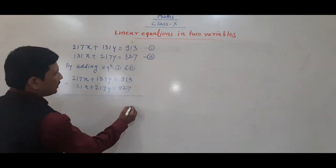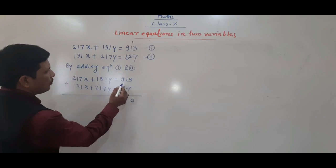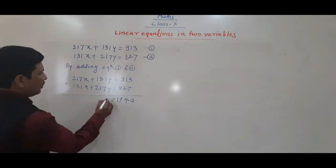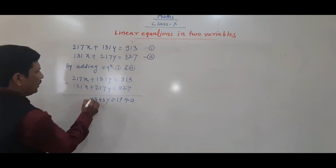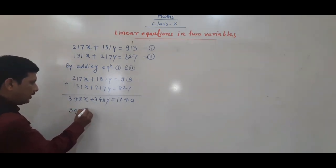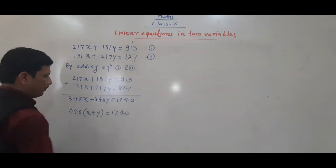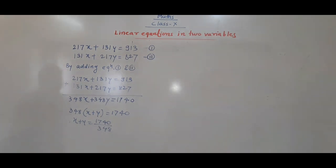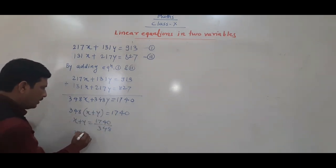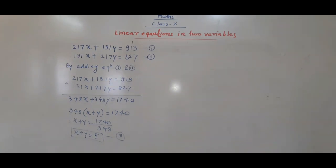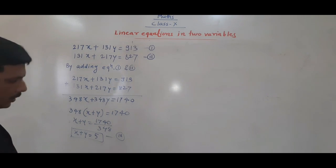Adding each term: 217 + 131 = 348 for x, and 131 + 217 = 348 for y, and 930 + 827 = 1740. So 348x + 348y = 1740. Taking 348 common: 348(x + y) = 1740. Dividing: x + y = 1740 by 348 = 5. So x + y = 5. This is the third equation.